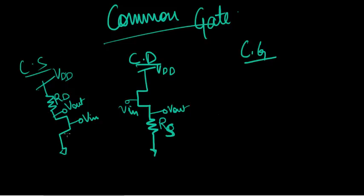We've seen the common source there. I think they're really familiar to you now. So the Rd load is connected to the drain terminal and Vout is at the drain terminal again. Vin is given to the gate and source is grounded. And in common drain, it's almost the same but Vout is taken from the source and everything is just inverted here.